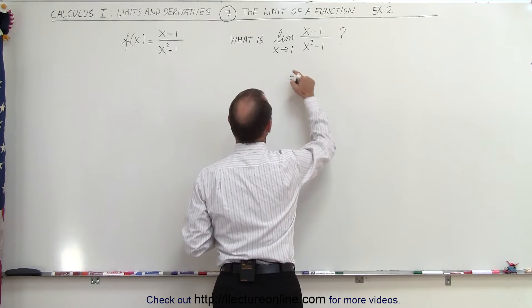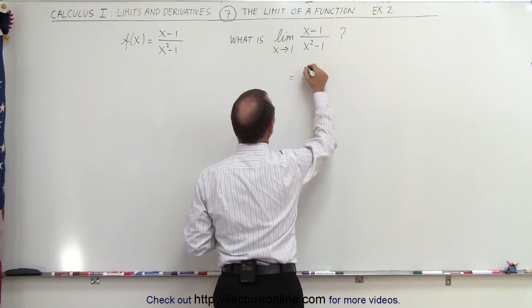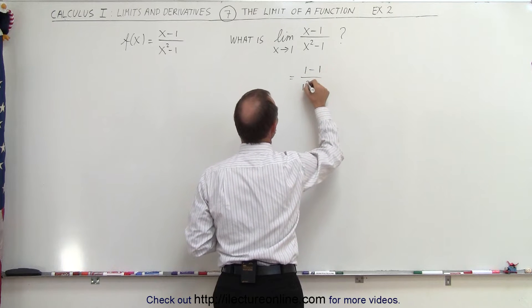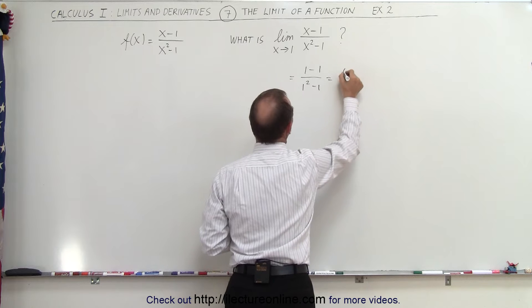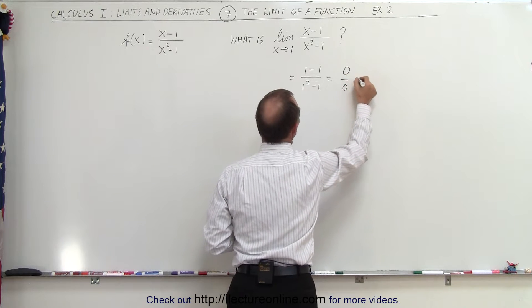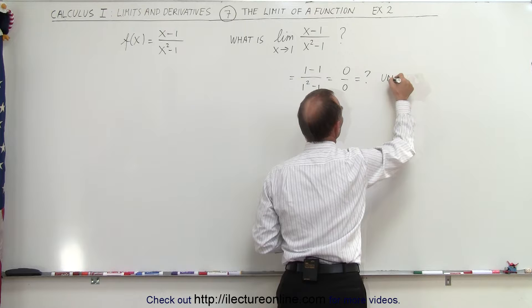And so what we're going to do is we're going to try to evaluate it. So this would be equal to, when we plug 1 in for x, we get 1 minus 1 divided by 1 squared minus 1, which is equal to 0 divided by 0, which is equal to, well, we would call that undetermined.